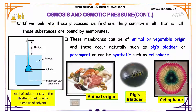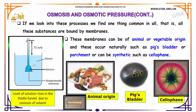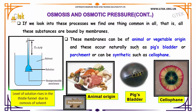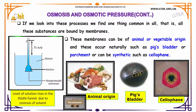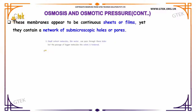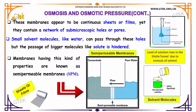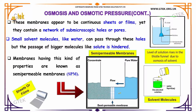If we look into these processes, we find one thing common in all — all these substances are bound by membranes. These membranes can be of animal or vegetable origin and occur naturally, such as a pig's bladder or parchment, or can be synthetic such as cellophane. These membranes appear to be continuous sheets, yet they contain a network of submicroscopic holes or pores. Small solvent molecules like water can pass through the holes, but the passage of bigger molecules like solute is hindered. Membranes having this kind of property are known as semi-permeable membranes.